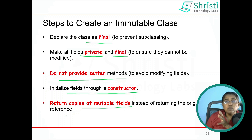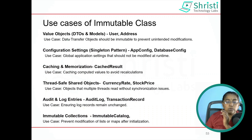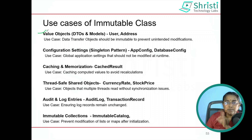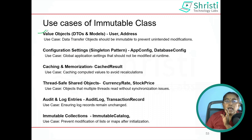Where exactly are these immutable classes used? They are used in different scenarios. In value objects — meaning DTOs and model classes — you should create your DTOs and model classes as final classes, instance variables should be private and final, and if somebody wants to access them, they have to use getter methods. Assign values to the fields using a constructor. This is done to prevent unintended modification.